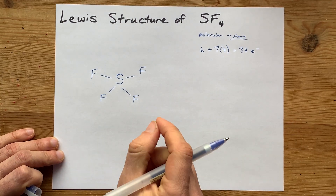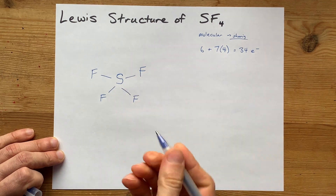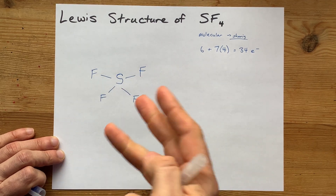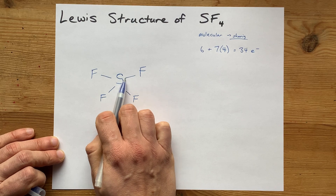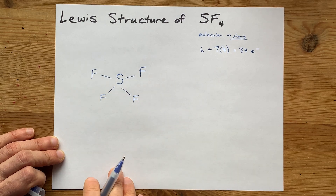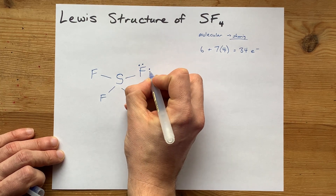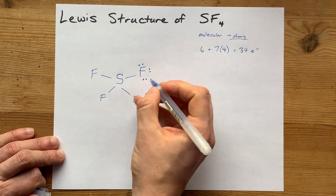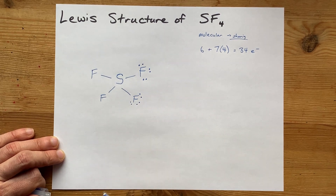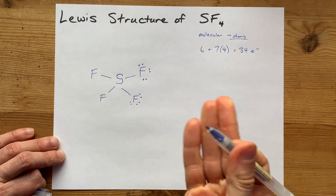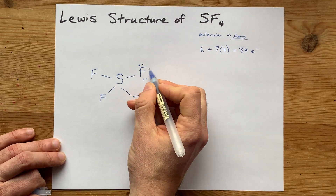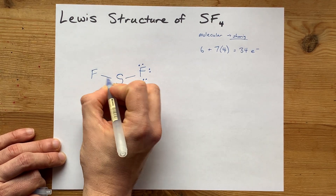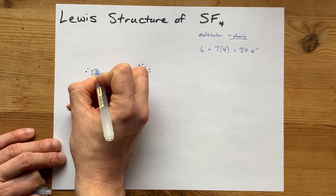The next step is to fill the octet on the outer atoms. The octet rule says that each of these atoms wants to have eight electrons around it. These fluorines only have two around them from the single bond, so we need a third through eighth electron to satisfy the octet rule. I'm going to do that for all four fluorines, keeping track of my total — that brings me up to 32 electrons used.